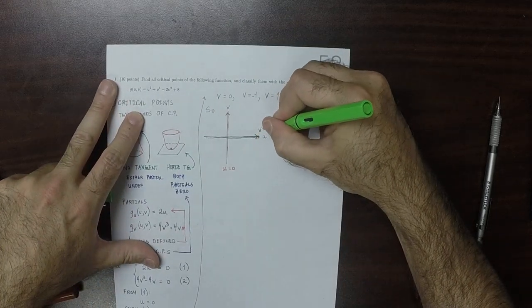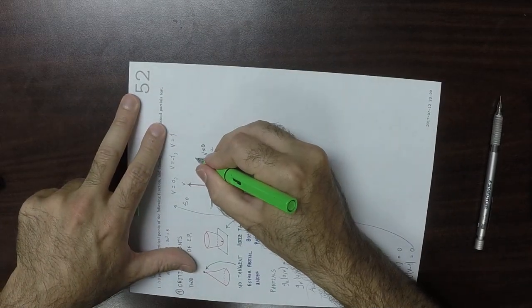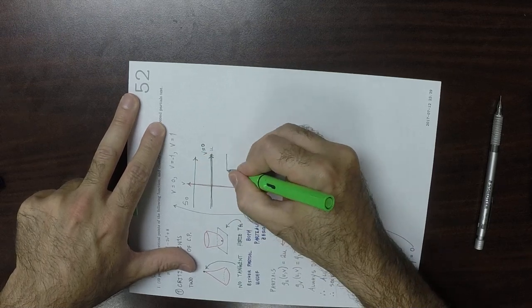So that's V is zero, and then V is one is up here. And V is negative one is down here.